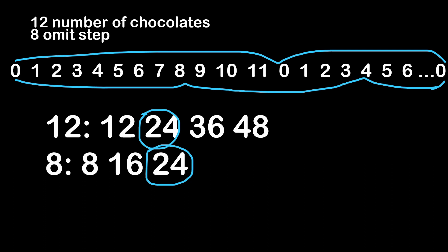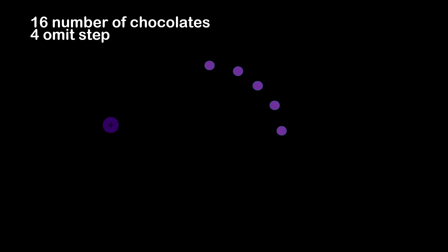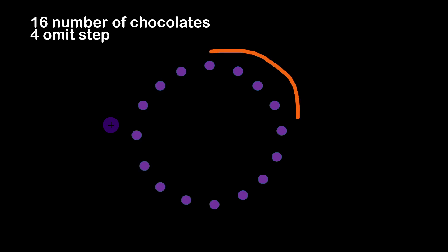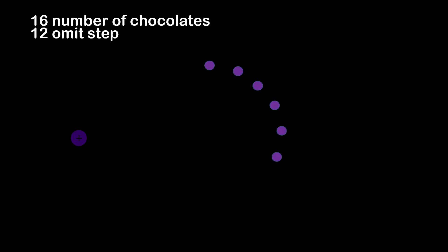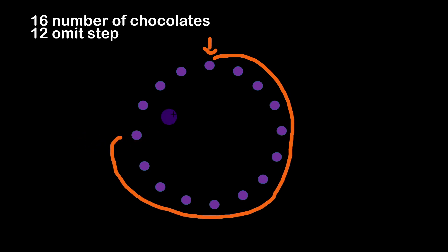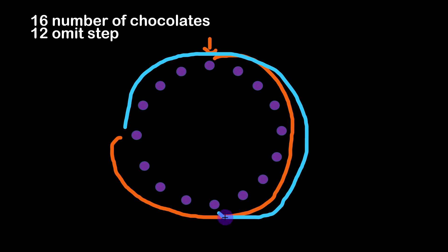Let's consider one more example and represent things differently. With a box of 16 chocolates and a step of 4, we can see again that we stop exactly at the same chocolate we started from. Now with the same 16-chocolate box and a step of 12, starting from index zero and omitting 12 each time: we land at index 12, then the next 12 brings us into the second round of the array, landing at a different position. These are the two eaten chocolates so far.